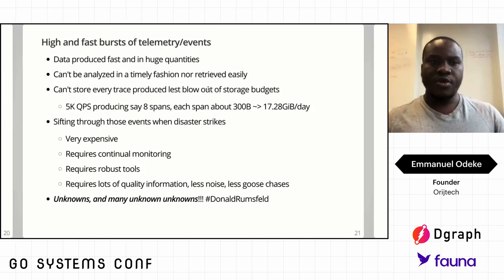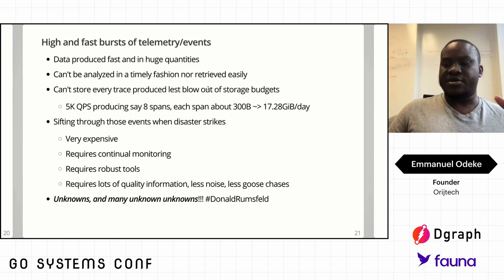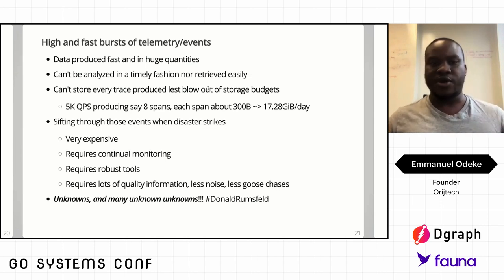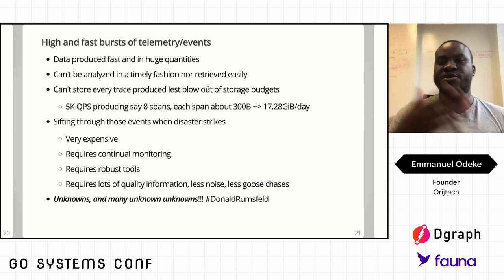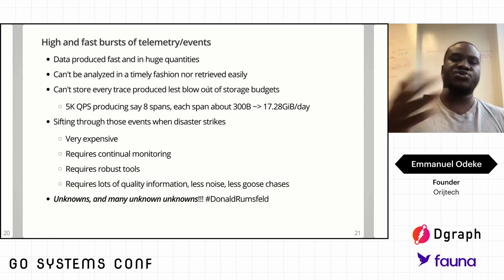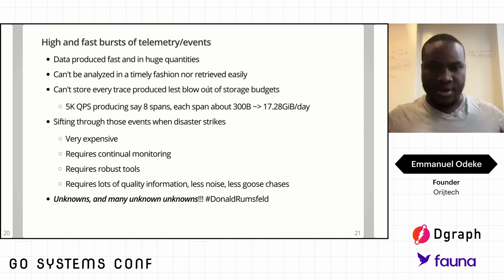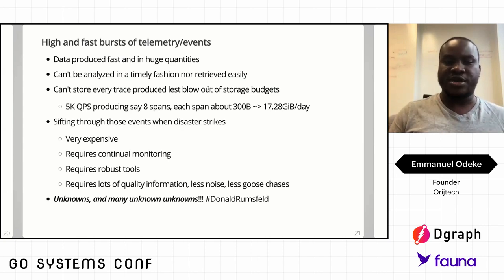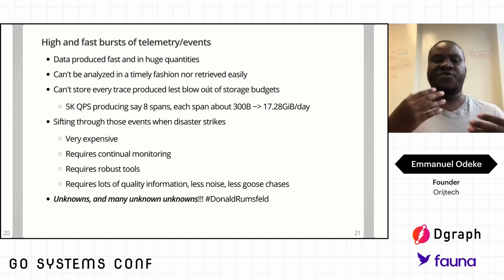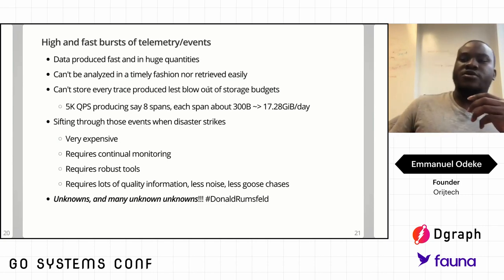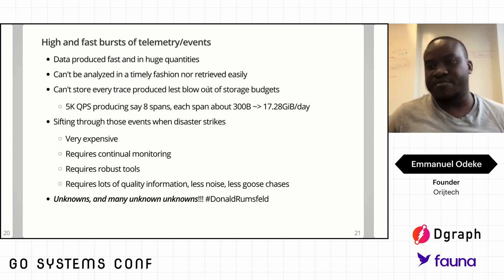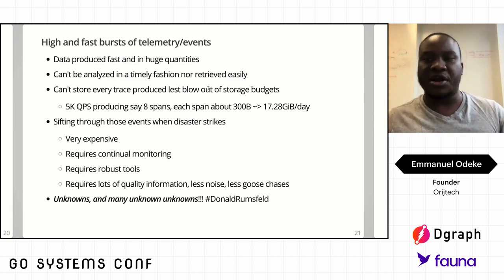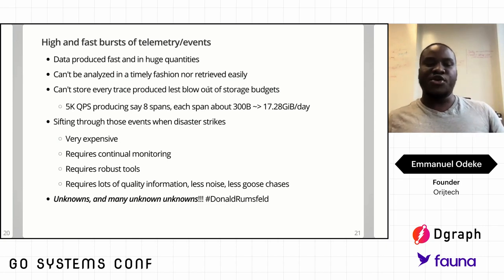Once your app gets very popular — say you're streaming on YouTube Live, Zoom, or Twitch and you get a whole lot of visitors — you're getting so much data flowing in, you can't analyze it manually in a timely fashion. When disaster strikes, it's very expensive. There's so much that could go wrong. You go on wild goose chases — did the service fail? Nope, it didn't. But by then you've burned two hours. Unknowns and many unknown unknowns, as Donald Rumsfeld famously said.